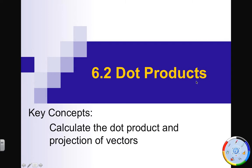Alright, welcome ladies and gentlemen. Section 6.2: dot products. We're doing some more stuff with vectors today. We're going to look at the very basic idea of what's called a dot product and a somewhat complex thing called projection — kind of a cool little thing but it's always kind of complicated.